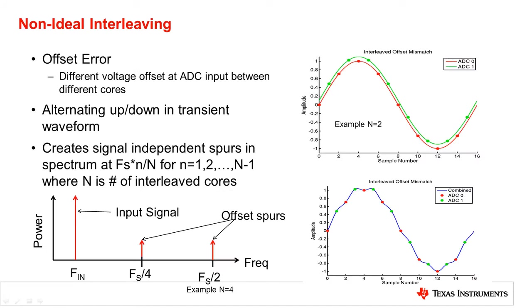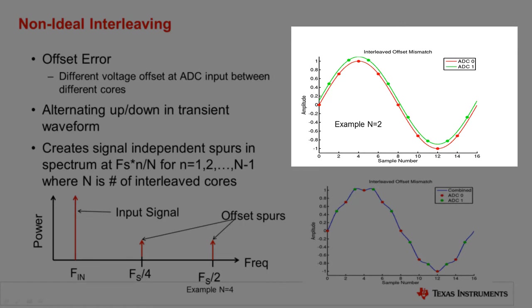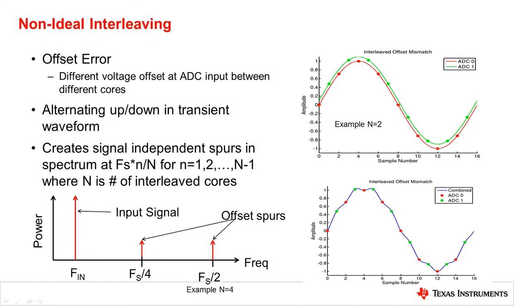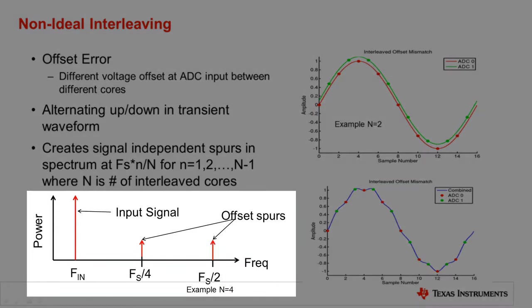Phase error compensation is more difficult to correct in real time. Offset error is due to different DC offset voltages for the different interleaved ADC converter cores. In this example, the red waveform is the waveform as seen by one interleaved ADC converter while the green waveform is the waveform seen by the other interleaved ADC converter. For uncorrected offset error, the result has the appearance of a sawtooth pattern on top of the ideal sample pattern, with samples alternately higher or lower in value than ideal. In the frequency domain, this tends to look like spurs in the resulting FFT spectrum at the Nyquist rate — sample rate over 2 for two-way interleaving, or multiples of sample rate over 4 for four-way interleaving.